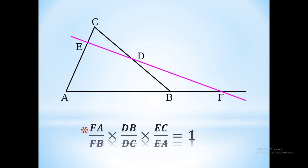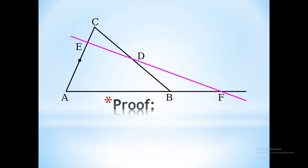So how are we going to prove this theorem? First, we need to construct line BG that is parallel to the line that passes through these three points E, D, F.